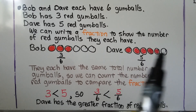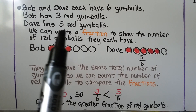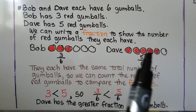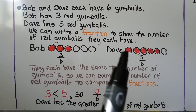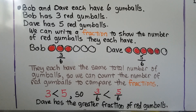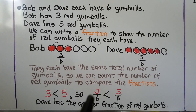Dave also has 6 gumballs. We know 5 are red, so we color in 5 red ones. He has 5 out of 6 gumballs that are red — he has 5 sixths that are red. They each have the same total number of gumballs — they each have 6. So we can count the number of red gumballs to compare the fractions. We know 3 is less than 5, so 3 sixths is less than 5 sixths, and Dave has the greater fraction of red gumballs.